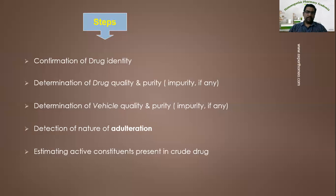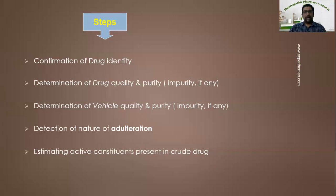The last step is estimating active constituents present in a crude drug. The pharmacological activity of a drug depends on various pharmacologically active constituents in the drug substance. If it is a vegetable or plant drug, it may contain active constituents like alkaloids, glycosides, saponins, tannin, oils, etc. — these are the pharmacologically active constituents, called phyto-constituents in the case of plants. Estimating the appropriate quantity of active constituents is very, very essential to assess the pharmacological activity of the drug.